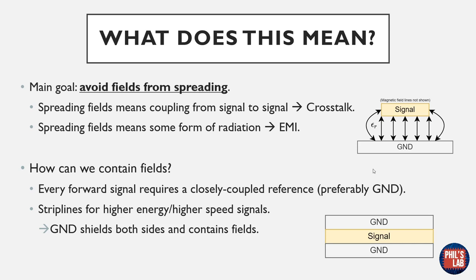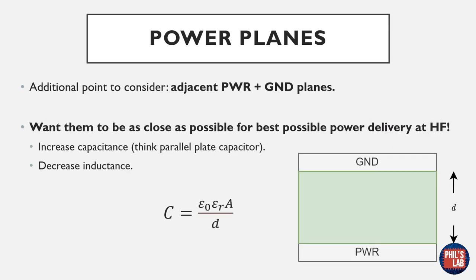Every forward signal or power plane needs a closely coupled reference — preferably ground. For high-speed or high-energy signals, it makes sense to use stripline instead of microstrip: the signal is sandwiched between two ground planes for nice field coupling on both sides. Additionally, adjacent power and ground planes act like a parallel plate capacitor — the capacitance equals permittivity times area divided by distance d. Making d very small by bringing ground and power planes closer together increases the capacitance, improving power delivery at high frequencies — especially important for FPGA or high-bandwidth interface designs.